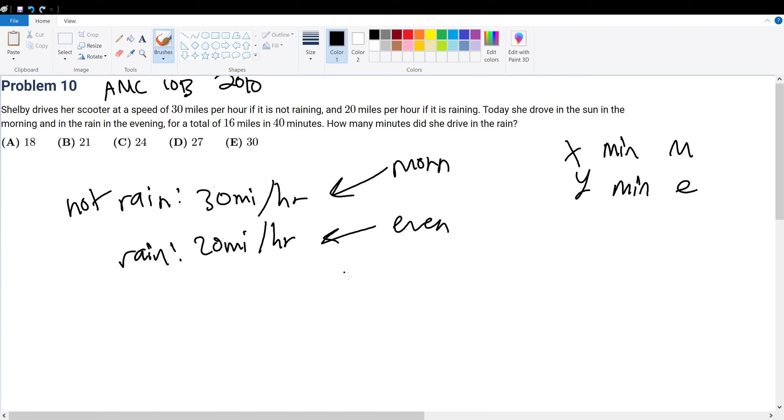So that means in the morning she drove 30 times—now remember, this is hours and this is minutes. So if we're going to multiply them together, we have to have the same units. So let's convert 30 miles per hour into miles per minute. So 1 hour is equal to 60 minutes, so this is 30 miles per 60 minutes, which is equal to 1 mile per 2 minutes, which is pretty fast when considering it's a scooter. So nonetheless,